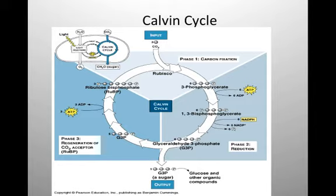It builds carbon from carbon dioxide into organic molecules: phosphoglycerate, bisphosphoglycerate, glyceraldehyde 3-phosphate, also known as G3P, and then making a G3P sugar from it.